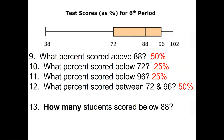How many students scored below 88? We know that's 50%, but we do not know how many students there are. Therefore, we cannot tell from the box and whisker plot how many students scored less than 88 unless we are given more information. Hopefully this helps you understand box and whisker plots — we're going to go through another example.